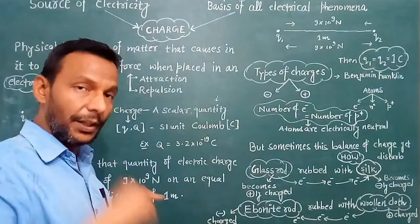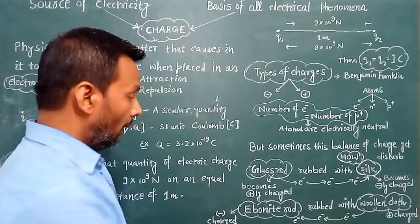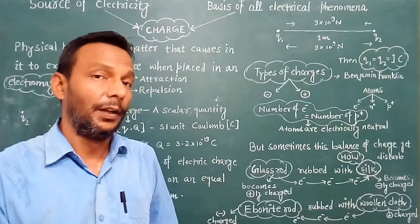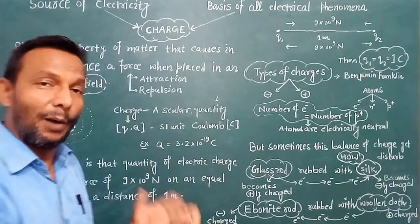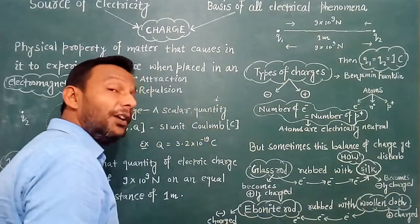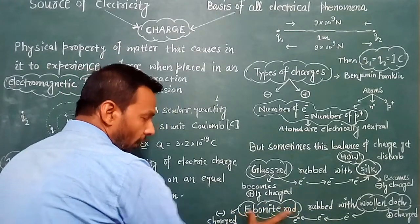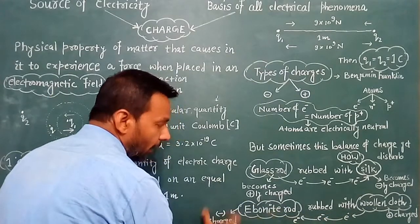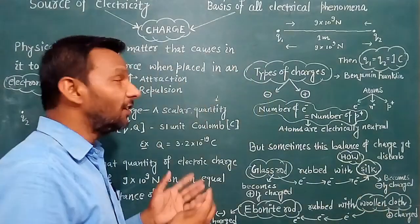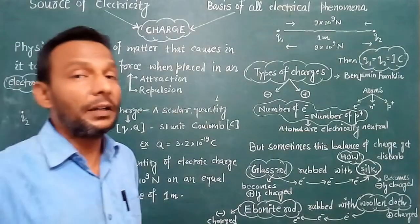Take another example: take an ebonite rod and rub it with wool. Just the opposite happens — electrons move from the wool to the ebonite rod. The ebonite rod becomes negatively charged because it gained electrons, and the wool becomes positively charged because it lost electrons. So charge happens when matter loses or gains electrons.